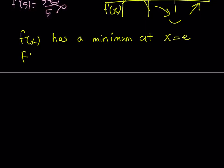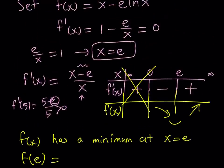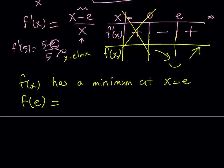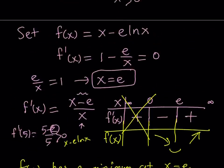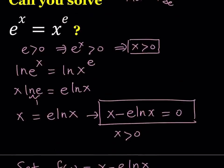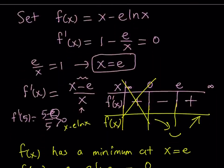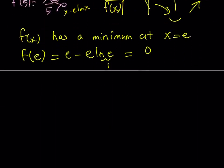Let's find that minimum value by substitution. Our function is x minus e·ln(x). Replacing x with e, we get e minus e·ln(e). Since ln(e) equals 1, this is e minus e, which equals zero. So the minimum value is 0, meaning x equals e gives us a solution. This shouldn't be surprising — you probably guessed that x equals e would be valid, because e to the power e equals e to the power e. Since f(e) = 0 and we were solving x minus e·ln(x) equals 0, x equals e is confirmed as a solution.